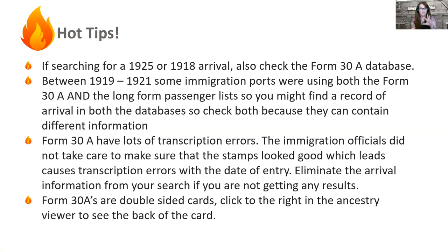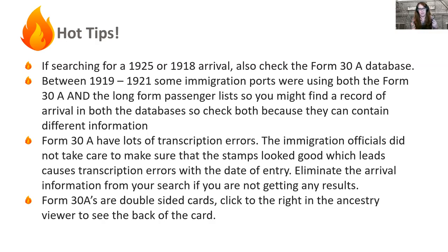Throughout the webinar there are hot tips pages — little things I've come across over 12 years of researching immigration records. You can pause to review them. For this section, one important tip about Form 30As (the 1919 to 1924 database): the arrival date is often transcribed wrong because the stamps on those documents aren't clear. Immigration officers didn't take great care to ensure the stamp was legible. I'll show you an example of that.